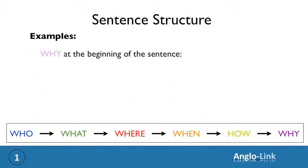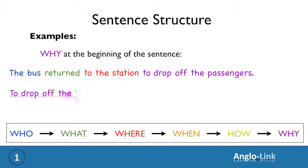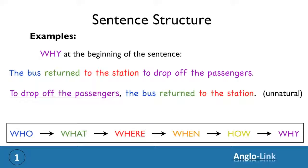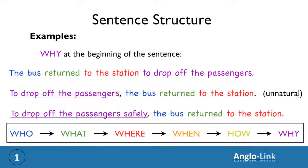And then one final example, putting why at the beginning of the sentence. We had a sentence, the bus returned to the station to drop off the passengers. Let's move the element why to the beginning. To drop off the passengers, the bus returned to the station. Once again, it sounds unnatural. But now, let's emphasize the reason a bit more. For example, to drop off the passengers safely, the bus returned to the station. And it sounds fine.